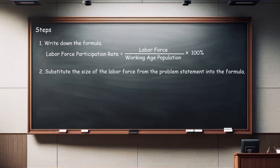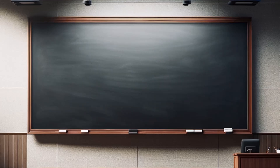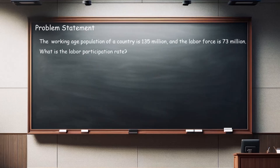Step two: substitute the size of the labor force from the problem statement into the formula. Step three: substitute the working age population from the problem statement into the formula. Step four: divide the labor force by the working age population. Step five: multiply by 100. Now let's look at a typical problem statement: the working age population of a country is 135 million.